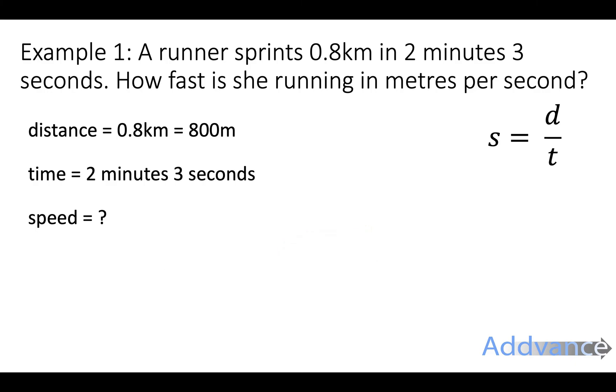To go from minutes to seconds, we're going to go from minutes to seconds by timesing by 60. So 2 minutes, we times by 60, 2 times 60 is 120. So this is 120 and 3 seconds, which is 123 seconds.